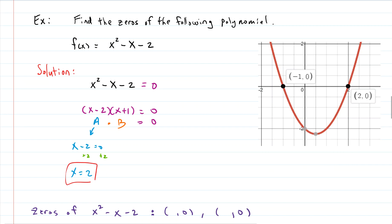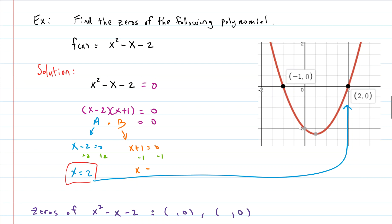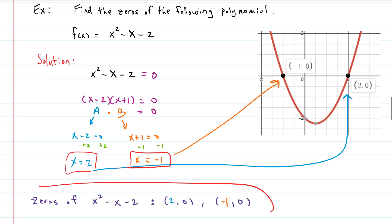There's one of our solutions — x equals 2 — and we can see it right there on the graph. Now the other factor: x plus 1 equals zero. Subtract 1 from both sides and we get x equals negative 1. So the zeros of the polynomial x squared minus x minus 2 are (-1, 0) and (2, 0). We found the zeros for this polynomial using factoring.